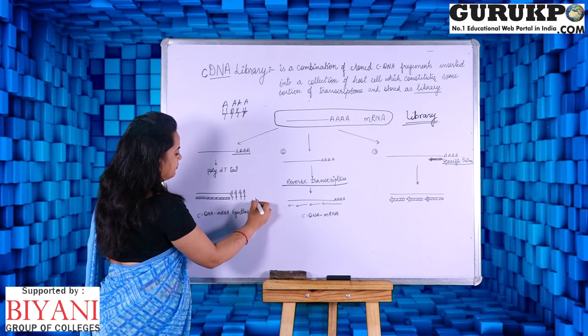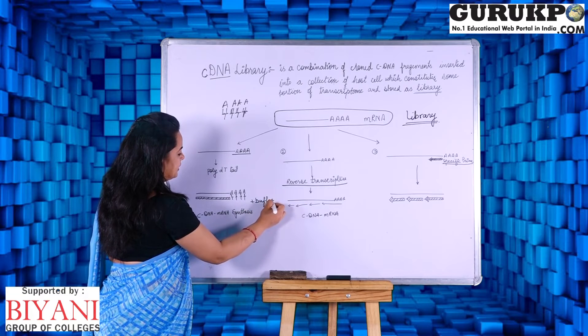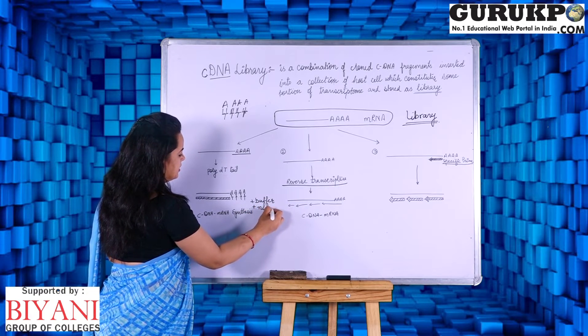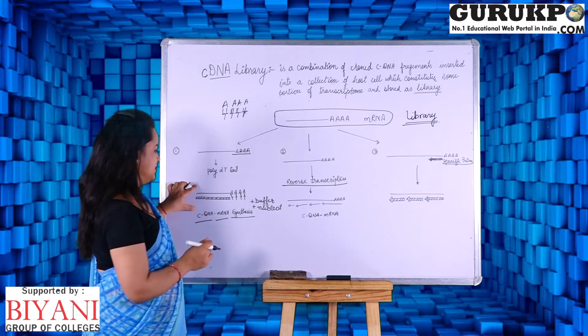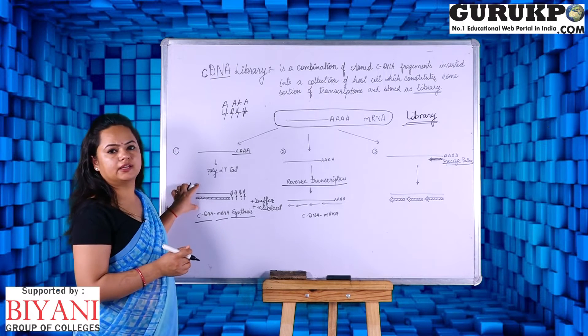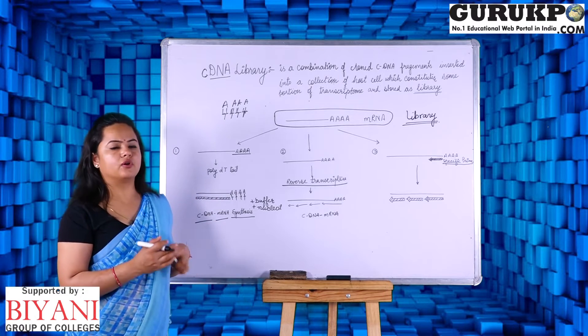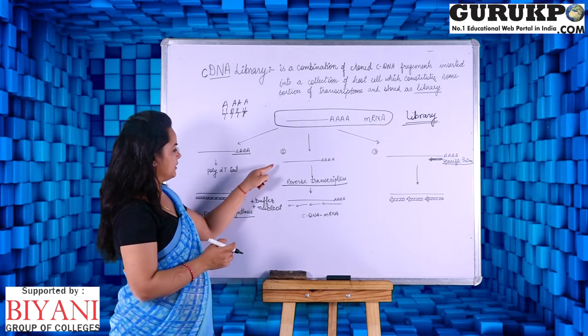By adding the buffer and other nucleotides, we can easily form a cDNA-messenger RNA complex and it can be used, it can be ligated to a vector according to the need.